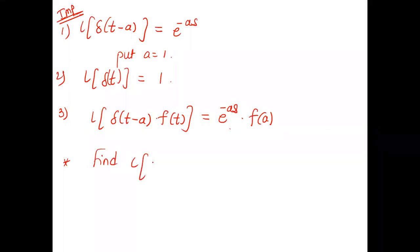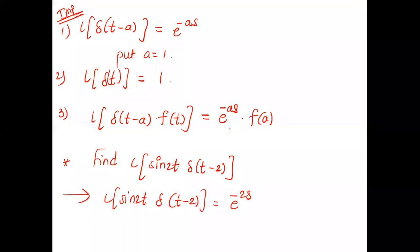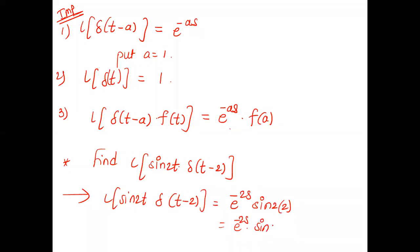Example: find L{sin 2t · δ(t-2)}. Using formula (3): L{δ(t-a)·f(t)} = e^{-as}·f(a) with a = 2 and f(t) = sin 2t. So the answer is e^{-2s}·sin(2·2) = e^{-2s}·sin 4.